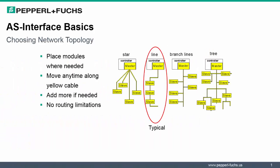Let's look at the number of network topologies supported by AS Interface. These can be either star topologies, line topologies, branch line topologies, or even tree topologies. Ultimately, AS Interface does not restrict you to your network topology.